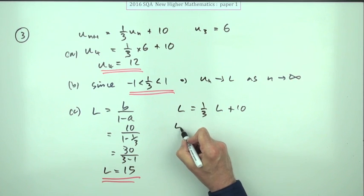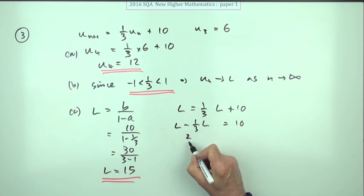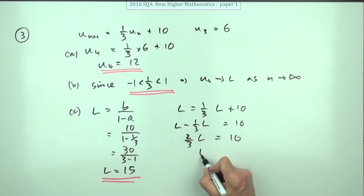And then solving that equation would be L minus a third of L would equal 10. And then that leaves you with two thirds of L equals 10, and that just takes you back to here, of course. L equals 10 over two thirds, which is again 15.